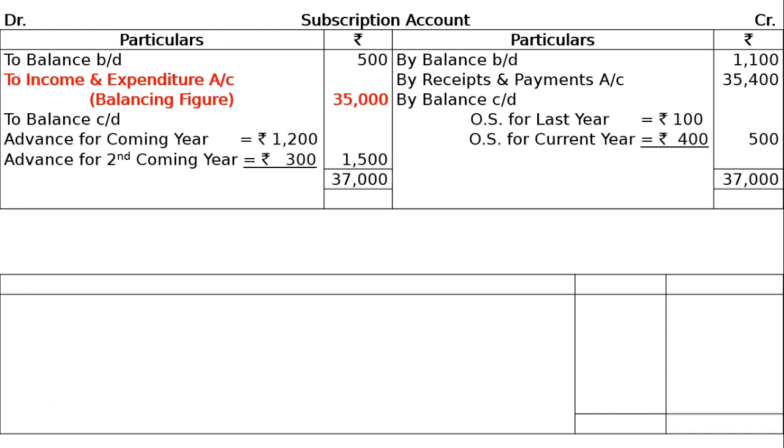The balancing figure is 35,000 for the current year subscription. Below is the statement showing calculation of the amount of subscription to be credited to the Income and Expenditure account for the year ended 31st March.